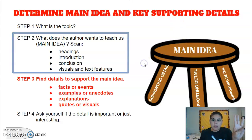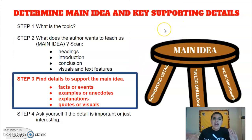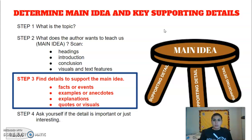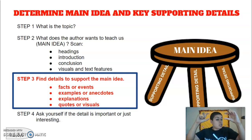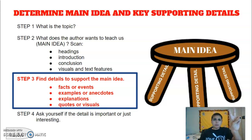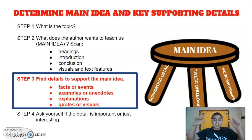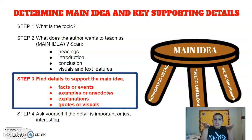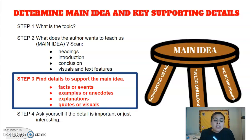And then step three, we want to find details that support that main idea. Step one: what's the topic? That's usually one word the text is about. Step two: what is the main idea — what does the author want to teach us? Step three: what details support the main idea? We can look at facts, examples, explanations, quotes, and even pictures.